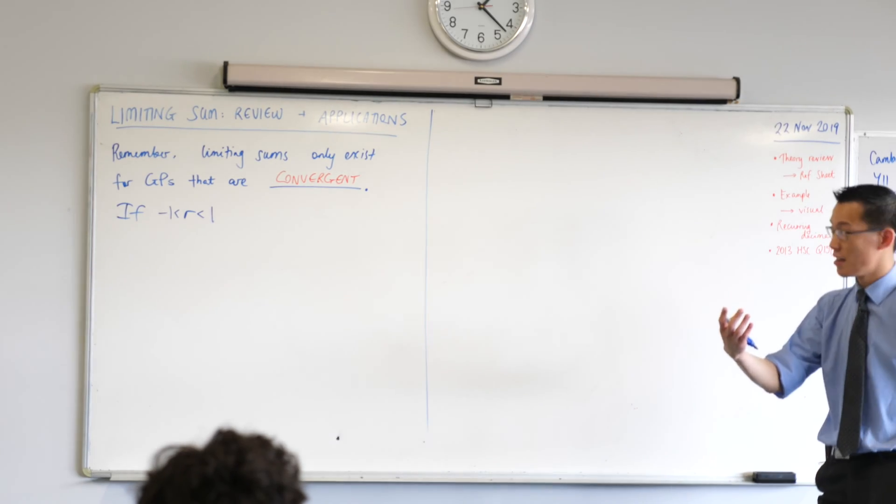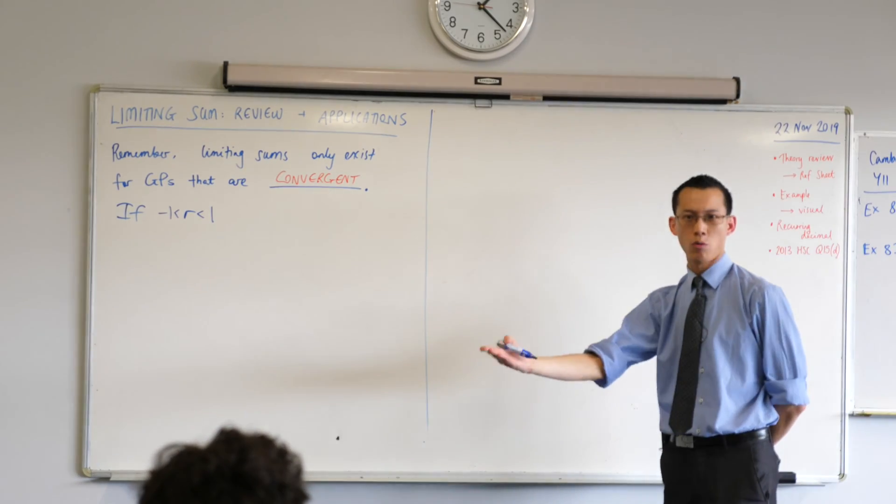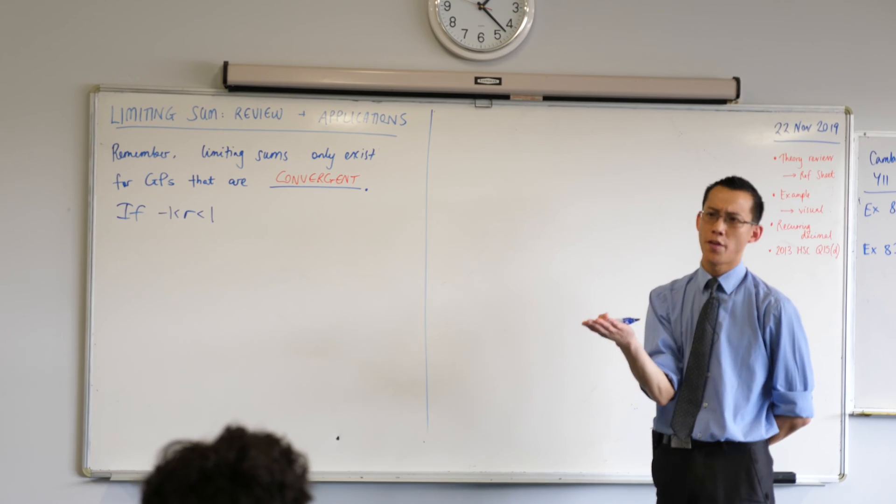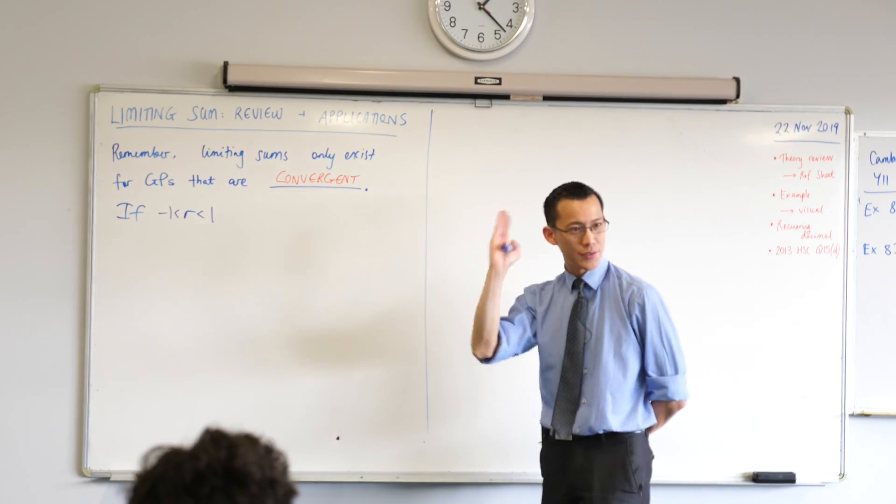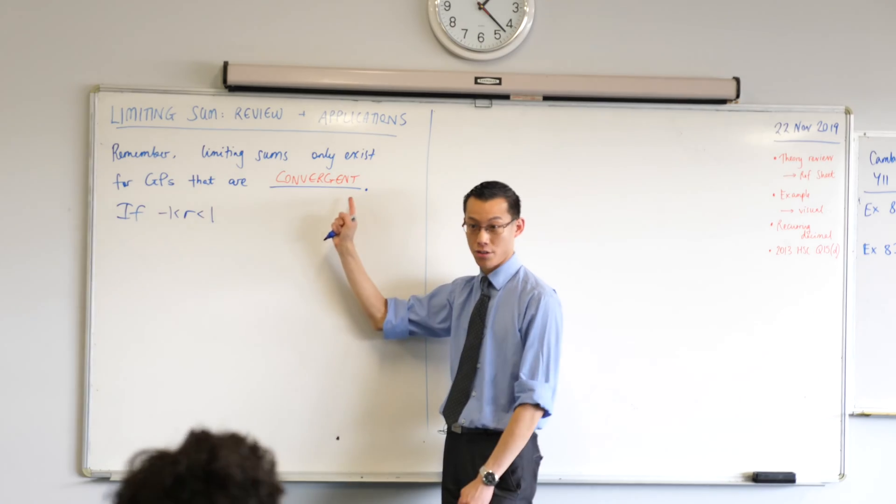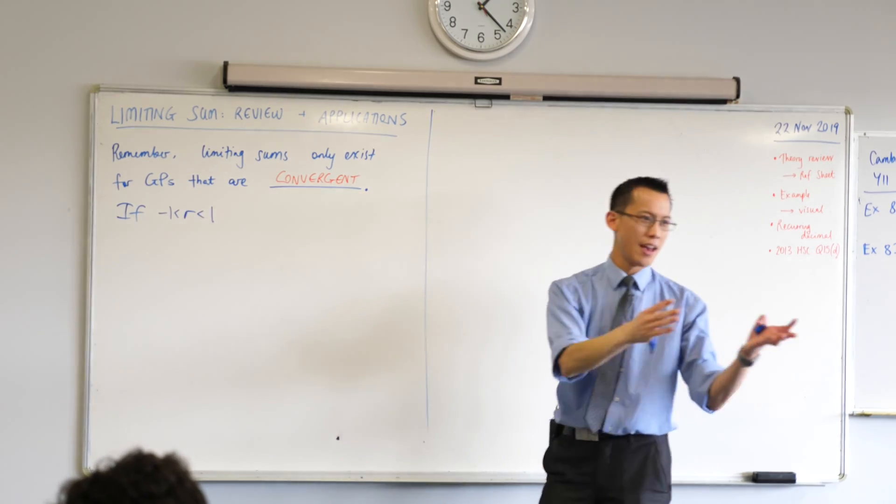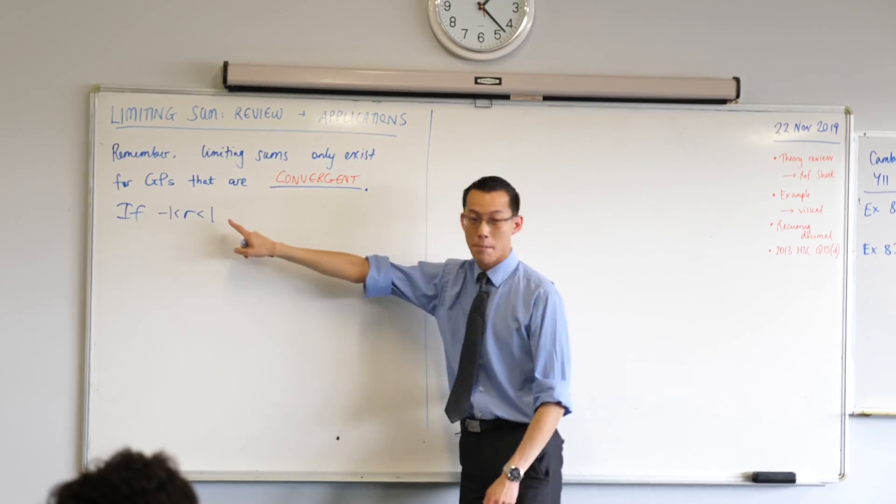If our first term was five and r was equal to one, what would the second term be? Also five. What about the third term? Also five. Does that series, five, five, five, five, does that converge? The answer is no. It's just going to keep on getting bigger and bigger forever. We just need it to be a bit smaller than that.